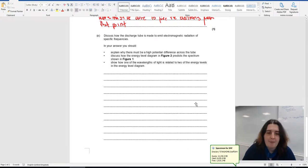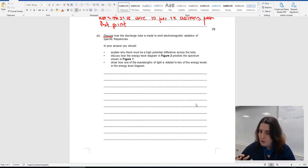Now, six marker. Discuss how the discharge tube is made to emit the AM radiation specifically. So this is discuss, so we're going to be talking about a multitude of things here. Your answer should include why there is a high difference across the stream, discuss how the energy level diagram predicts the spectrum, and show how one of the wavelengths is related to the two energy levels. So you've got three things that you should include, and you've got six marks. You're going to talk about two points for each of these.